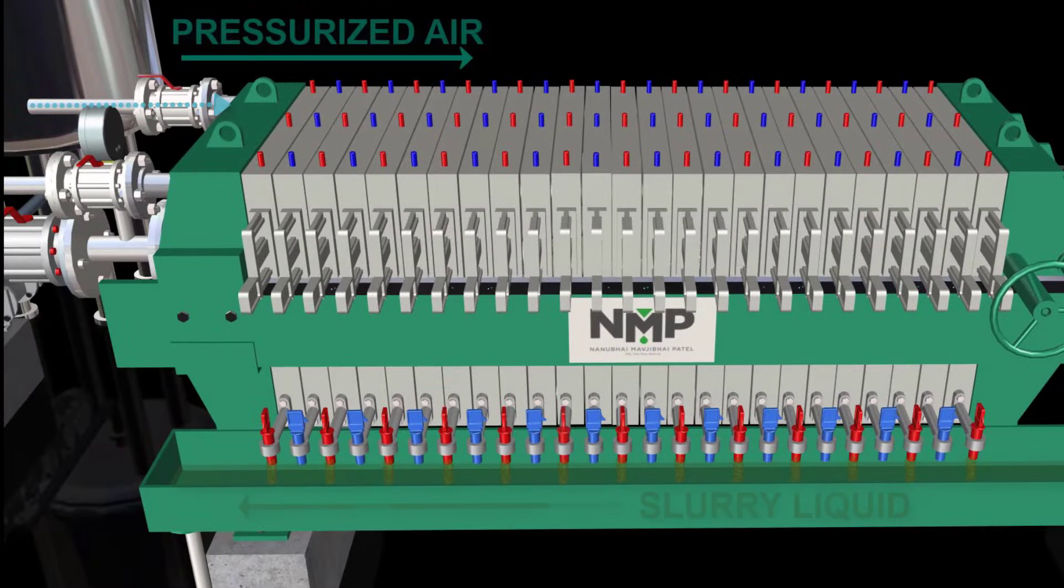When pressurized air enters from the top end flanges, it starts pressing the slurry between plates, resulting in the draining of liquid from bottom passages.